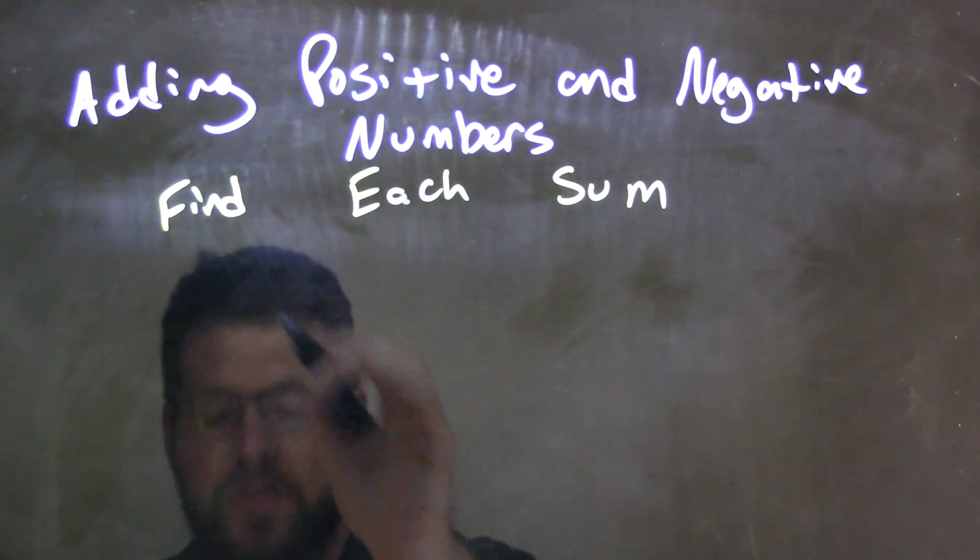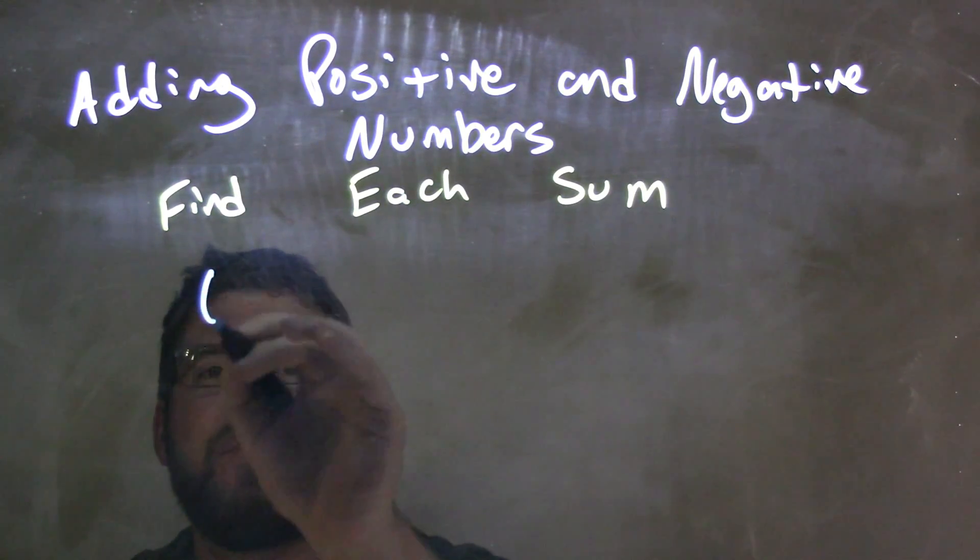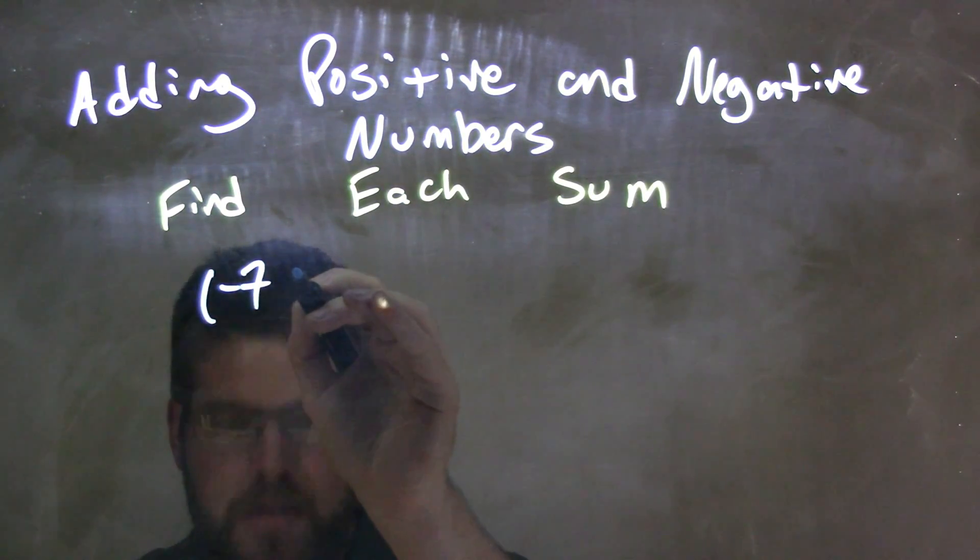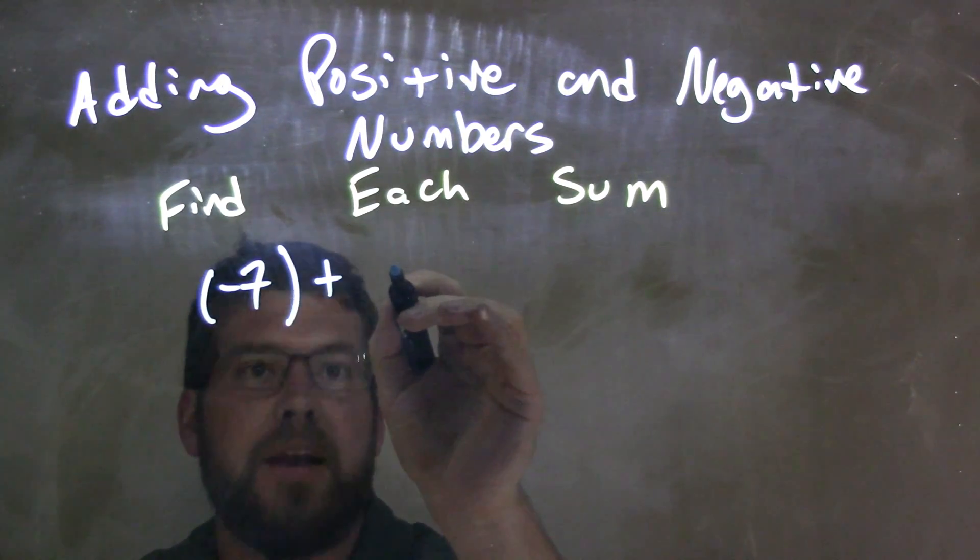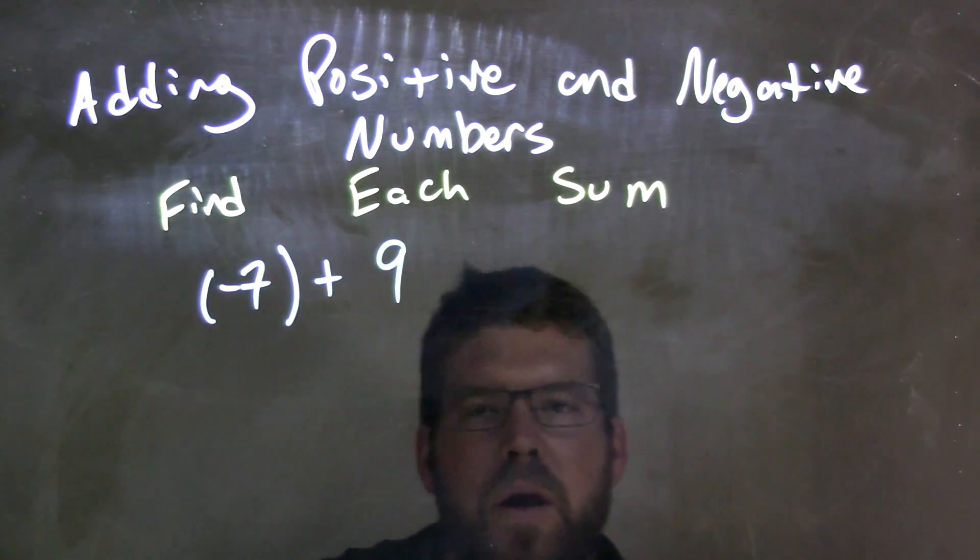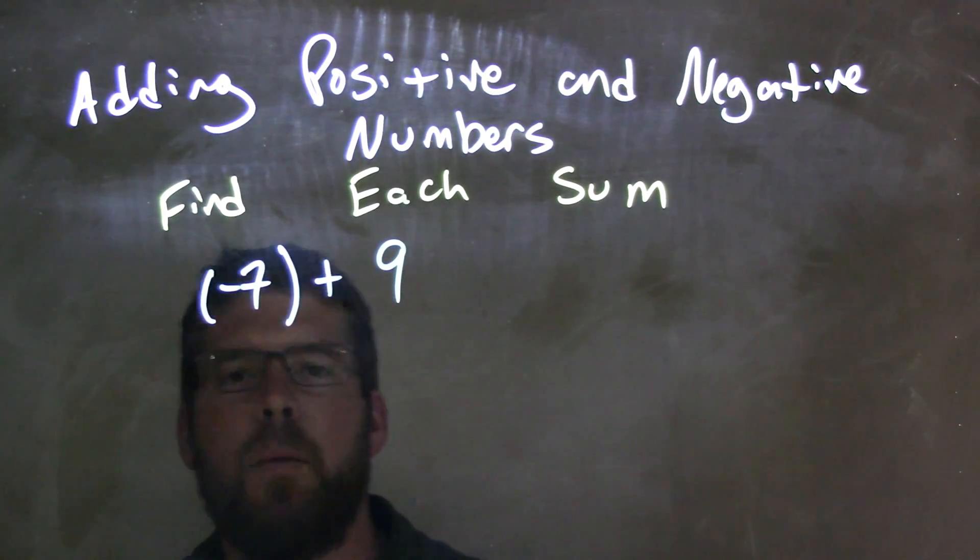So if I was given this expression, negative 7 plus 9, and I wanted to add them together, negative 7 plus 9.